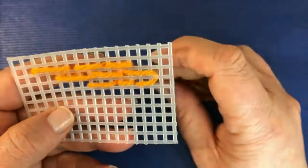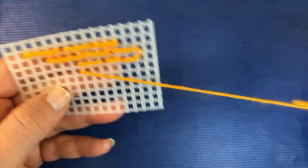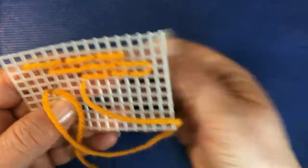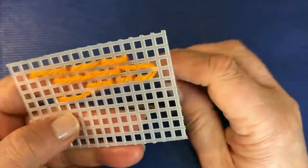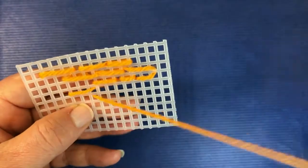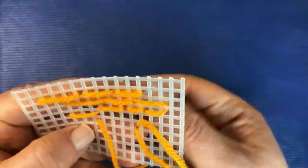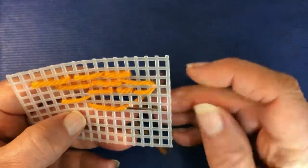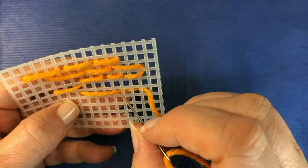So what you can do with long stitch is stitch away leaving spaces so that you can bring in different colours to create a really lovely textured piece.